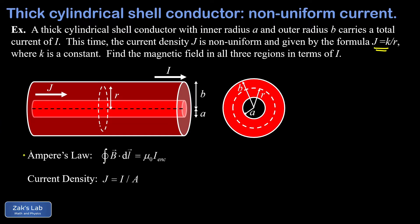At the bottom we're given a couple of quick reminders. There's Ampere's law, stating that the path integral around an Amperian loop equals μ₀ times the current enclosed by that loop. There's also a reminder of the basic definition of current density — current per unit cross-sectional area, I divided by A. With a non-uniform current density, J takes a different value at every value of r, so it's not as simple as I = J×A. We'll have to look at this in differential form, and we'll get to that modification when we need it later in the problem.